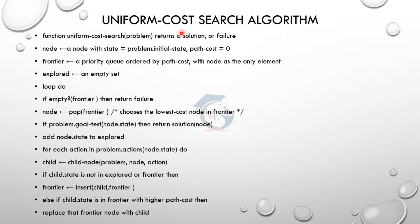Uniform cost search algorithm: function uniform cost search with problem returns a solution or failure. We create a node with problem.initial_state and path cost 0. The frontier contains all elements ordered by path cost. We expand elements based on lowest path cost.